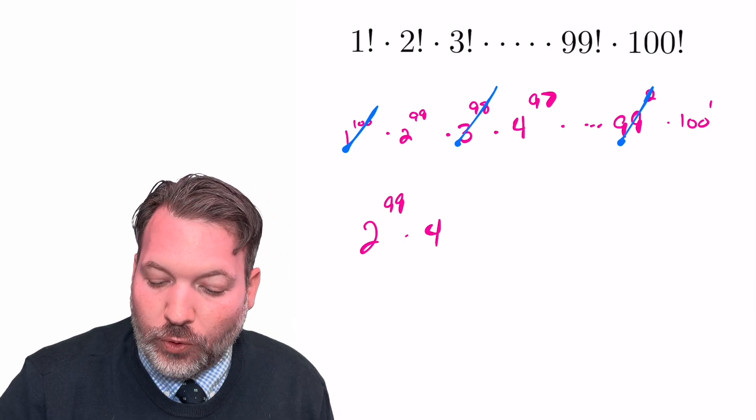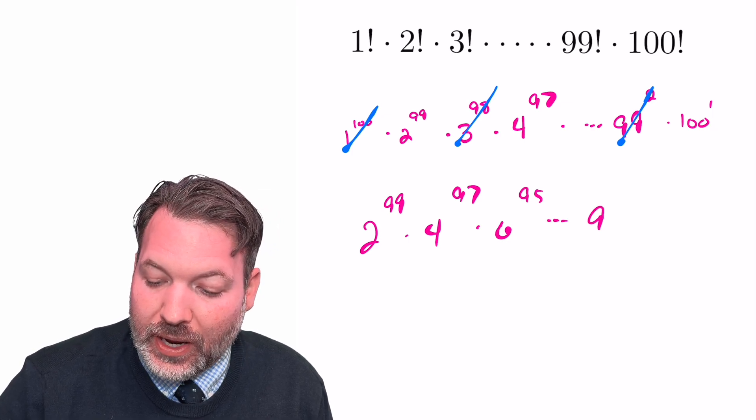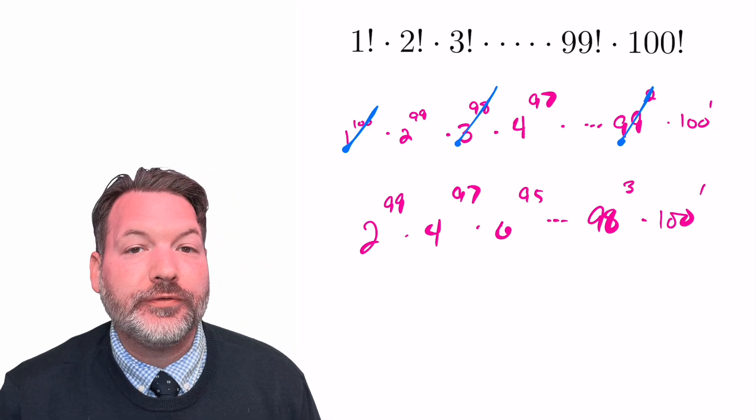2 to the 99th, 4 to the 97th, 6 to the 95th, all the way up to 98 to the 3rd, and of course, 100 itself to the 1st.